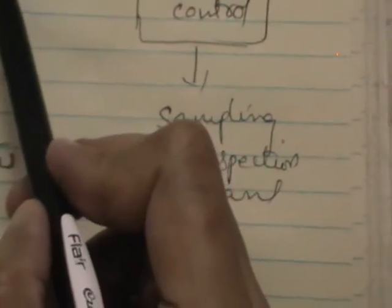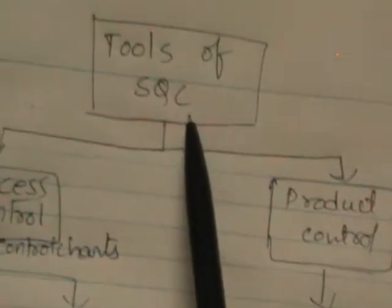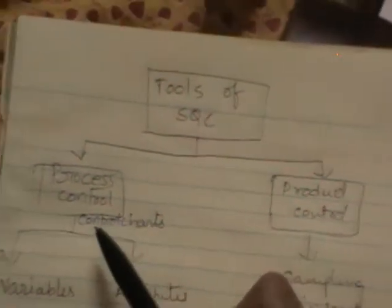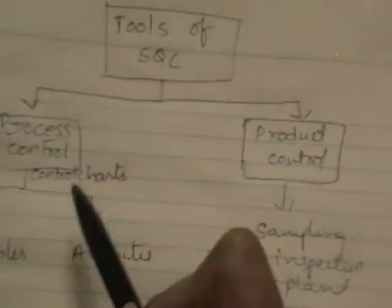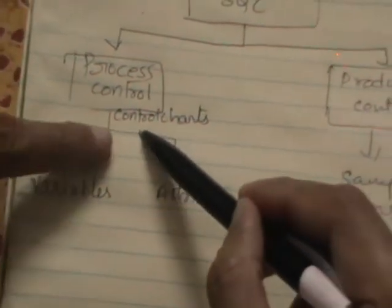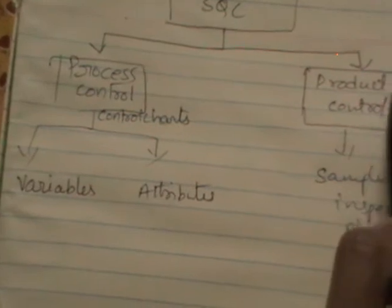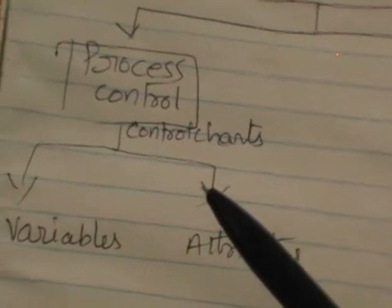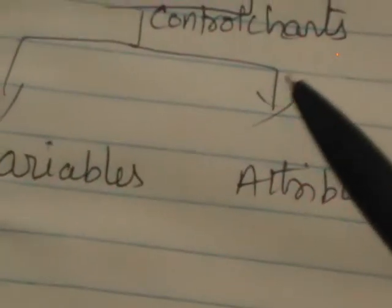The main purpose of SQC — statistical quality control — is to give assurance for the quality of the items so produced. The two tools are: either you control the process or the product, or both. The process can be controlled using tools called control charts. The product can be controlled by sampling inspection plans. Control charts are of two types: control charts for variables and control charts for attributes. Product control can be achieved by sampling inspection plans.